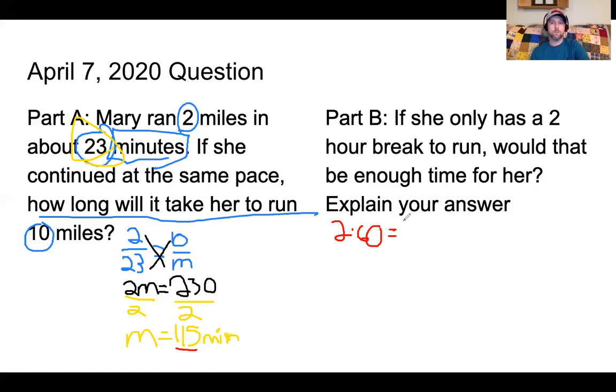2 times 0 is 0, 2 times 6 is 12, so 120 minutes. So if she has a 2-hour window exactly, that's 120 minutes.